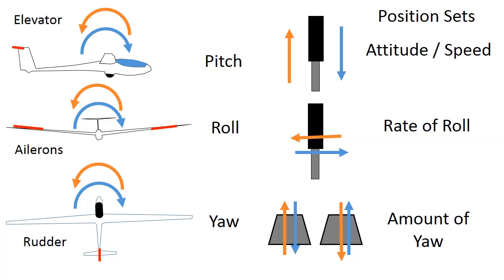In summary, we've introduced the elevator, ailerons, and rudder which control pitch, roll, and yaw. You can control pitch by moving the stick forwards and backwards, and the position of the stick sets your attitude and therefore your speed. You can control roll by moving the stick left and right, and the position of the stick controls the rate of roll — the glider will continue to roll until you centralise the stick. You can control yaw by moving the rudder pedals forward and back. A good coordinated turn requires you to coordinate the stick and rudder in terms of both roll and yaw, and requires a small amount of back pressure to keep the nose up during the turn.